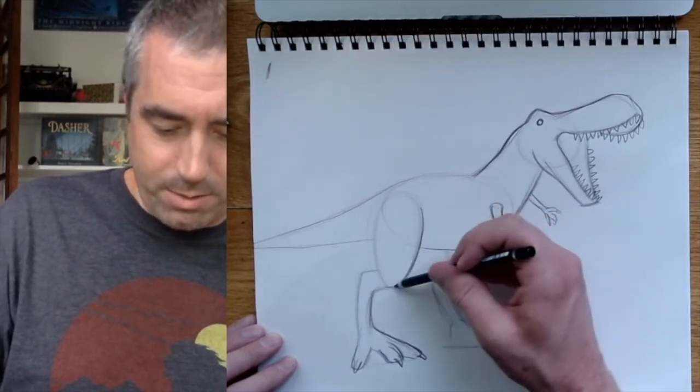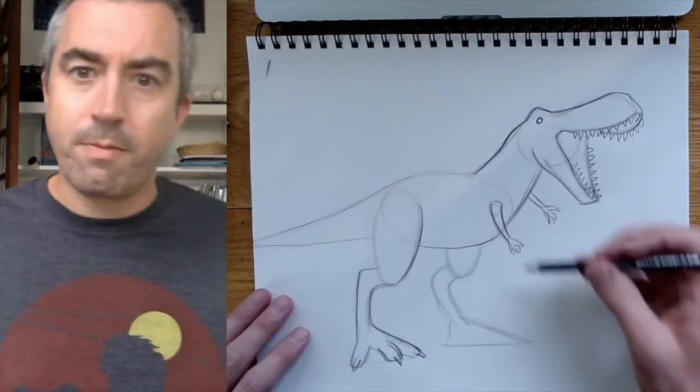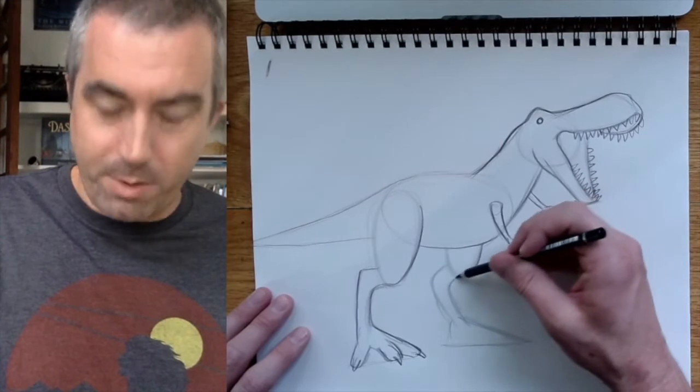So I'm going to add these sort of like toes with a claw at the end of each one. Then I'm going to go over these lines a little bit, just make them darker. Same thing with this one. I'll add those.